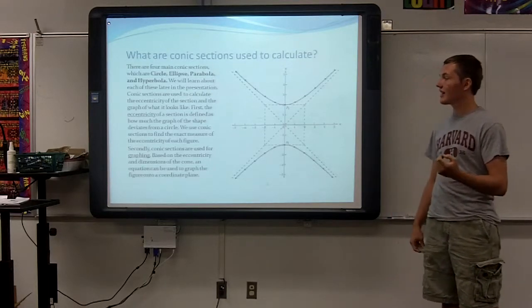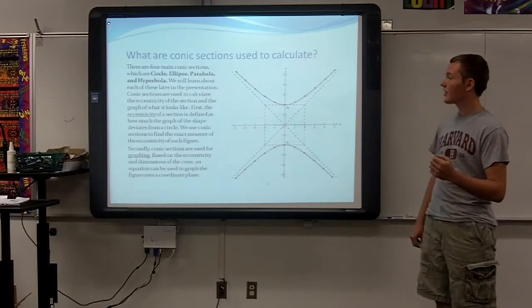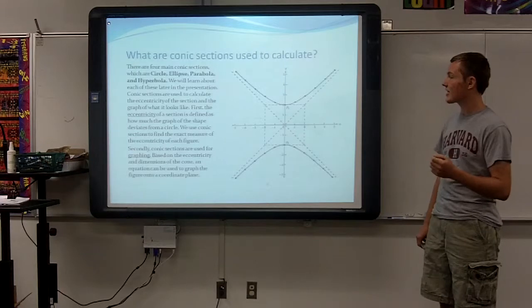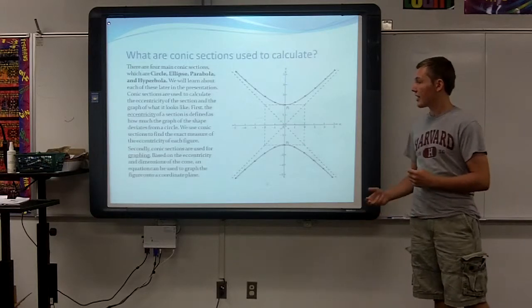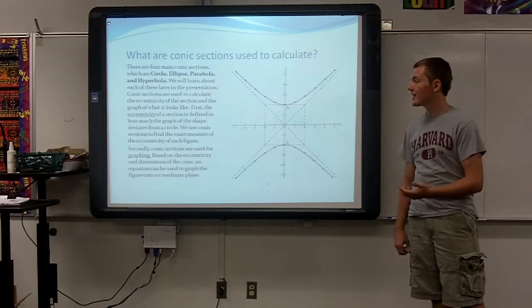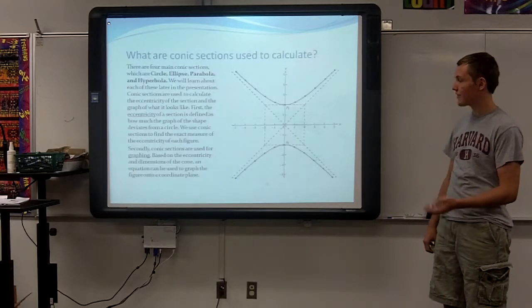Conic sections are used to calculate the eccentricity of the section and graph what it looks like. First, the eccentricity of a section is defined as how much the graph of the shape deviates from a circle. We use conic sections to find the exact measure of the eccentricity of each figure.